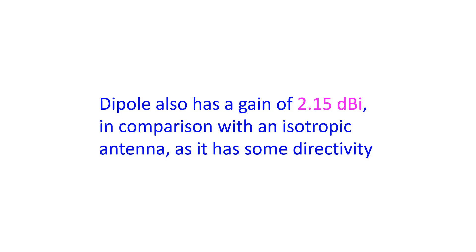A dipole antenna has a radiation pattern perpendicular to the radiating element — that is, a horizontal dipole will have a horizontally polarized radiation with a null in the direction of the ends of the dipole. Hence, the dipole also has a gain of 2.15dB in comparison with an isotropic antenna, as it has some directivity. When the gain of an antenna is compared to that of a dipole, it is designated as dBd.